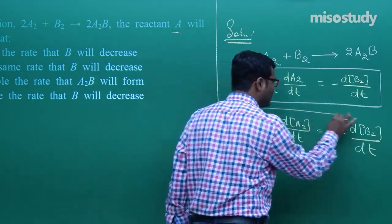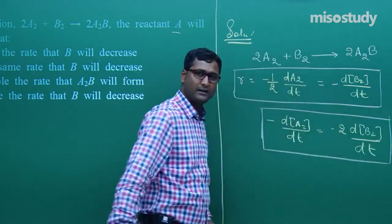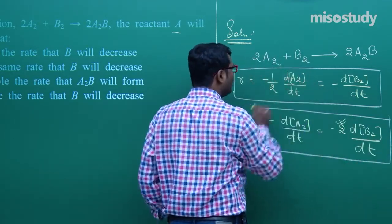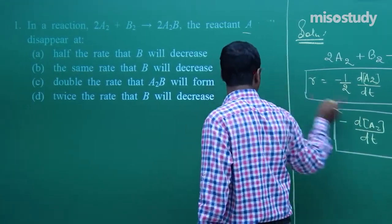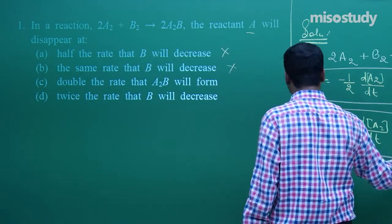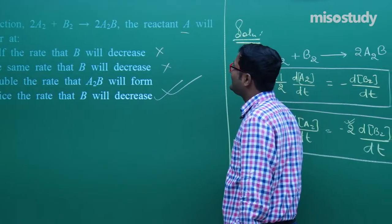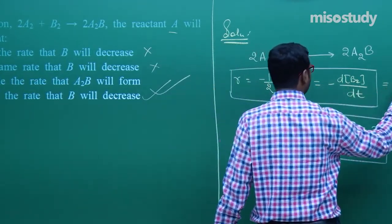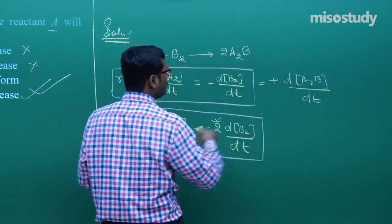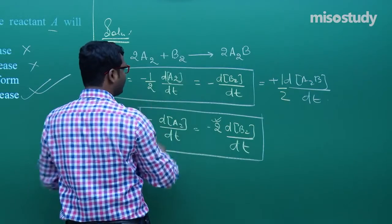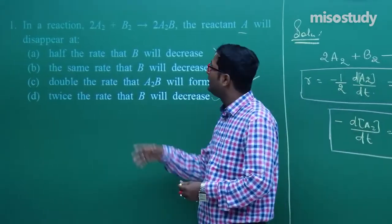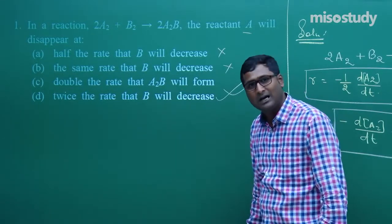The rate of disappearance of A₂ is twice — double — the rate of disappearance of B₂. Now check the options: half the rate B decreases? No. Same rate? No. Double the rate A₂B forms? No. The answer is: twice the rate that B₂ decreases. So D is the correct option. In terms of A₂B, d[A₂B]/dt with a factor of 1/2 equals the rate of disappearance of A₂ — not double. After concluding everything, D is the correct option.